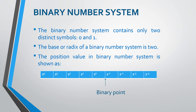Binary Number System mein 2 symbols hotey hain which are 0 and 1. Isme symbols 2 hain to base value will be 2. Position value in Binary Number System is like this — yeh humara binary point hai. Isme jo fraction part hai uski position value 2 ke negative powers mein increase karegi, and integer part ki position value 2 ke positive powers mein increase karegi. For example, this is a binary number — this is the fraction part and this is the integer part.